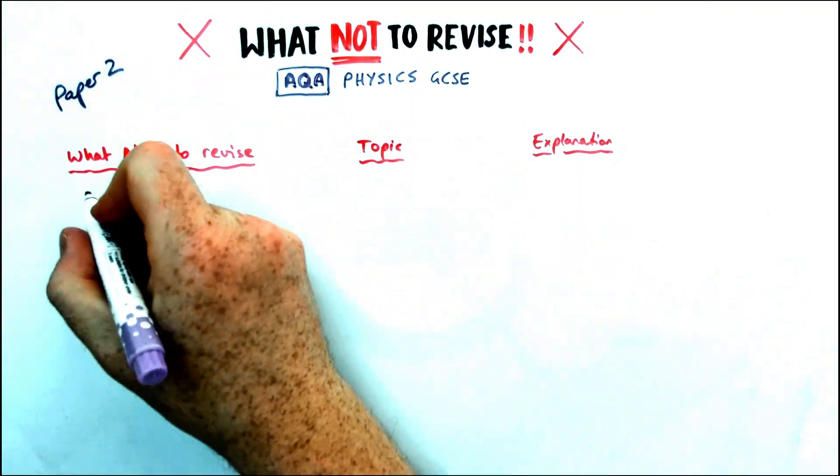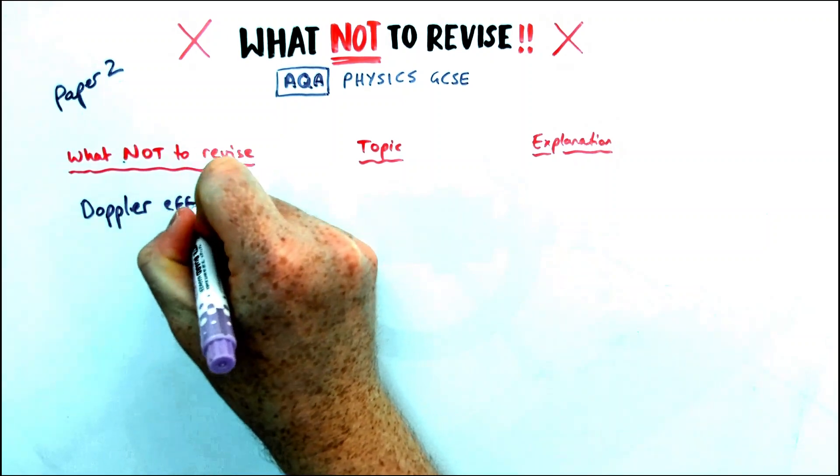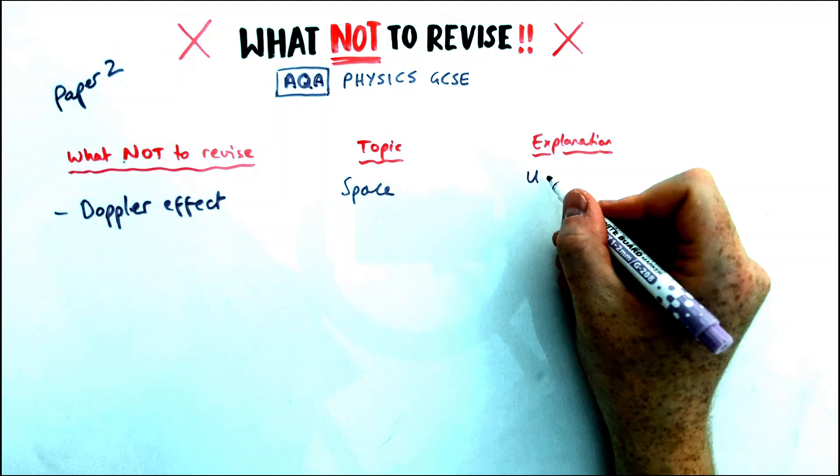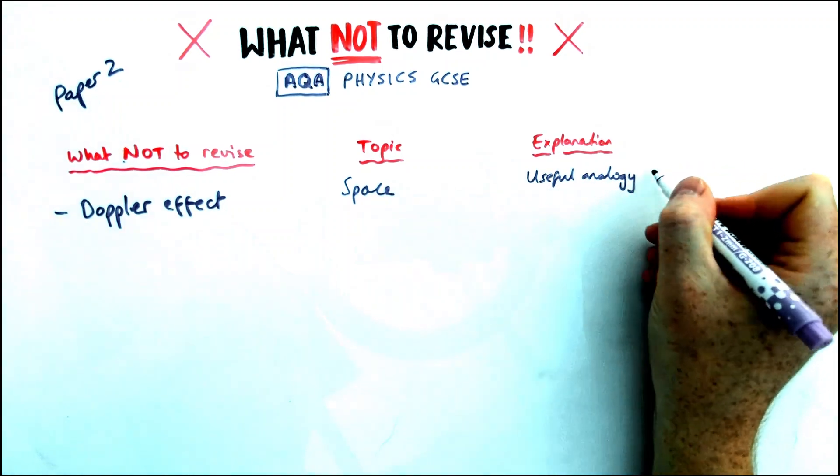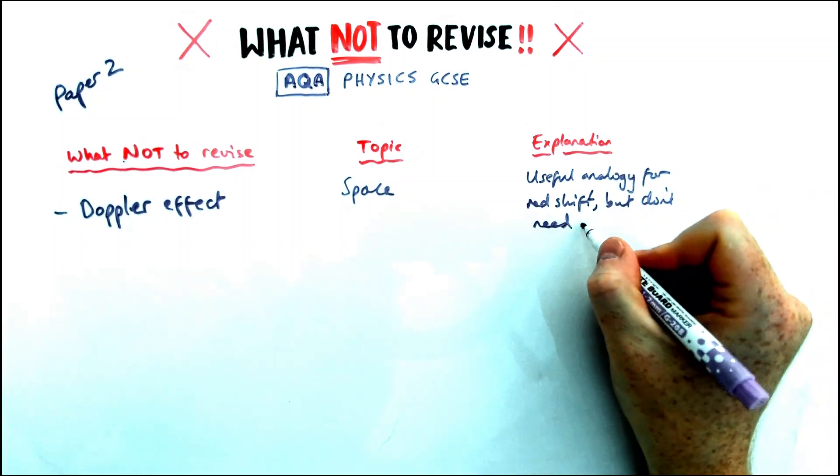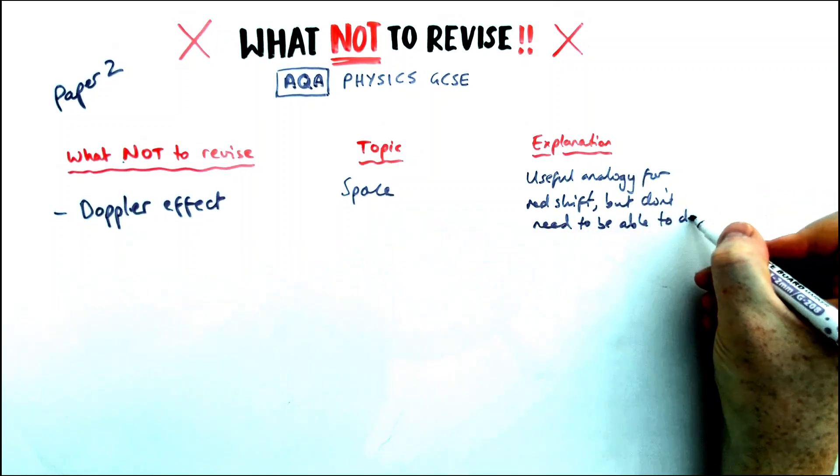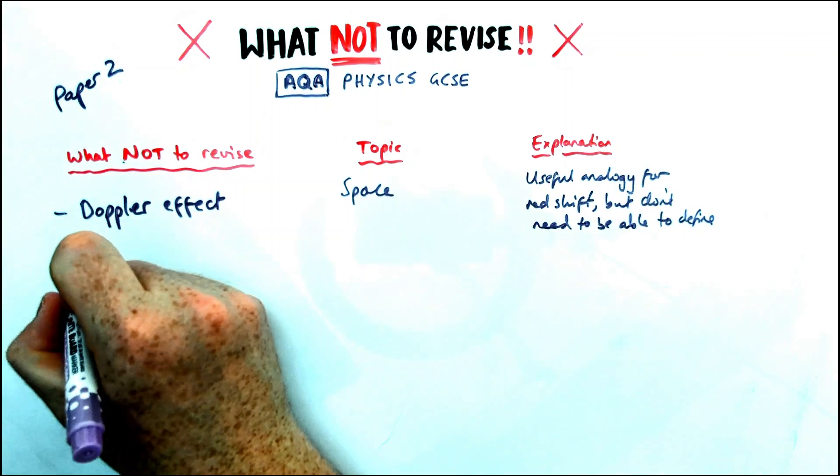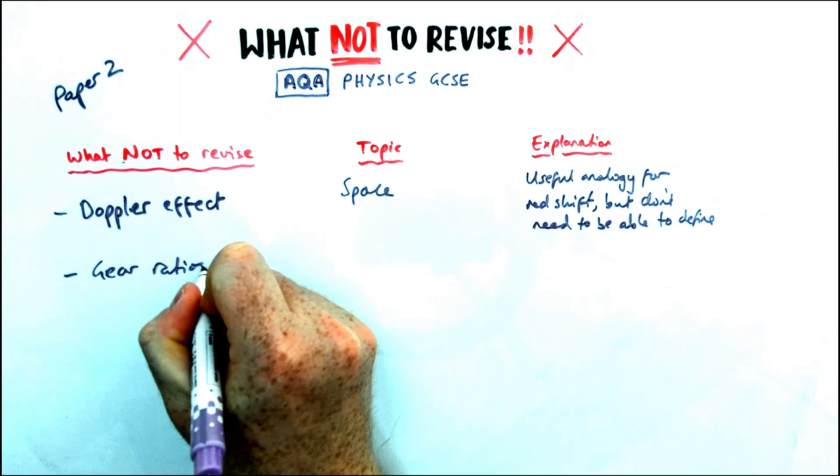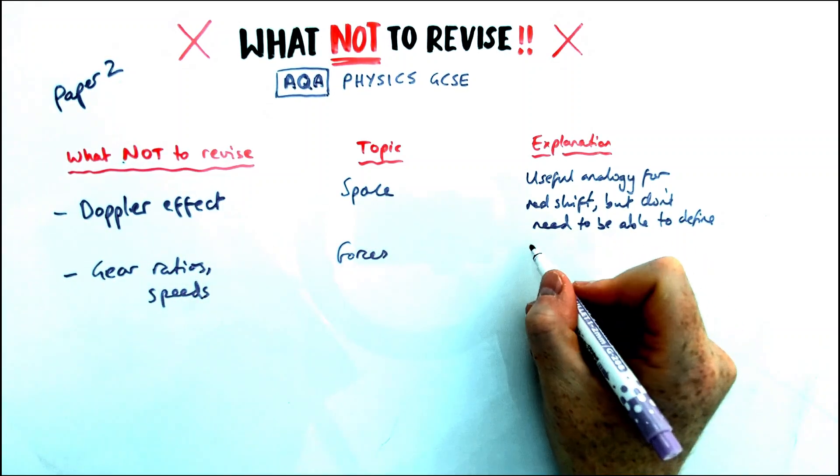Let's move on to Paper 2. This one's quite interesting. I only realized this a year or two ago, which is the Doppler effect. In the space topic, you only need to know about redshift, and Doppler effect is a really useful analogy for it. It's how sound waves change in wavelength if they're going towards you or away from you, like with an ambulance coming towards you, it gets higher pitched. But you don't need to be able to know it or define it. It's only used in the context of redshift for galaxies moving away from us in space.